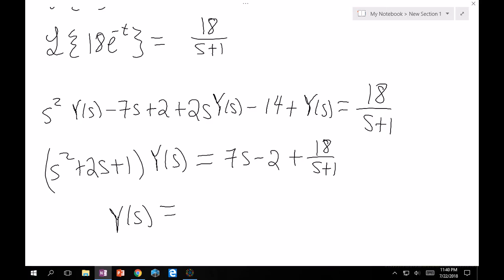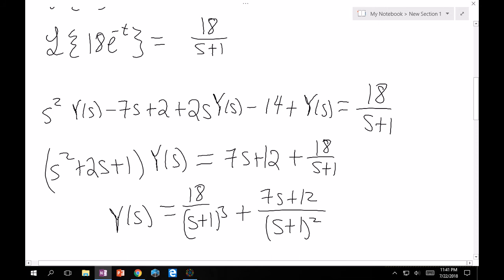Now, we want to get this explicit for Y of s. And so, hopefully by now you can see that s squared plus 2s plus 1 is really just s plus 1 quantity squared. So this is going to be 18 over s plus 1 cubed, and then this is going to be plus 7s plus 12 over quantity s plus 1 squared.